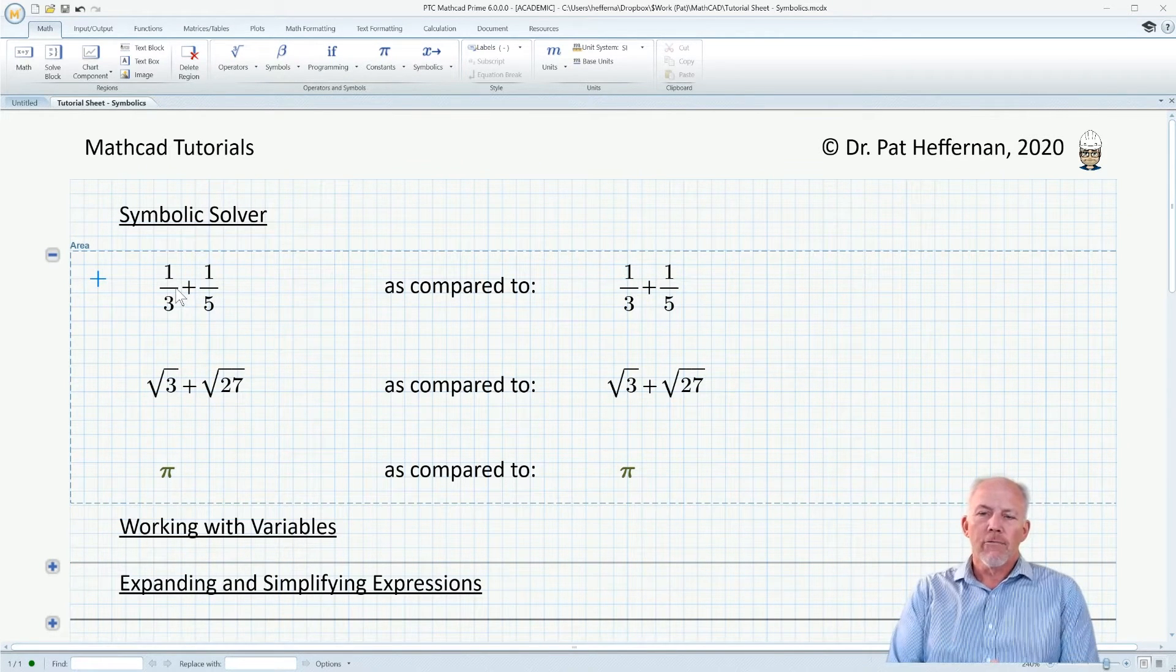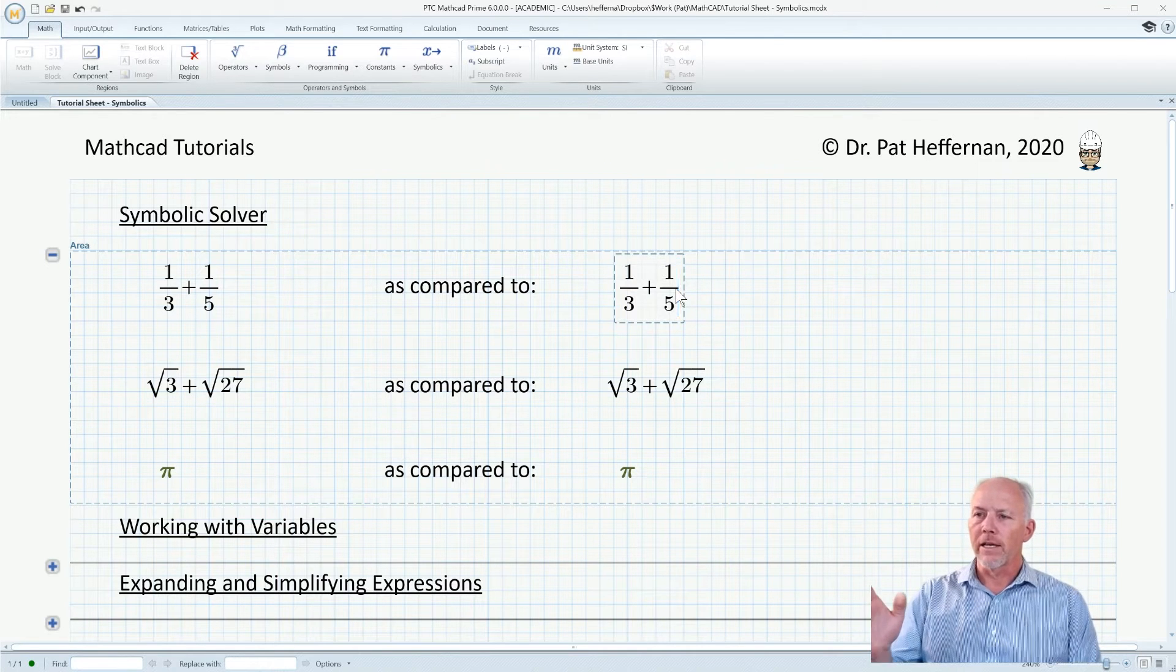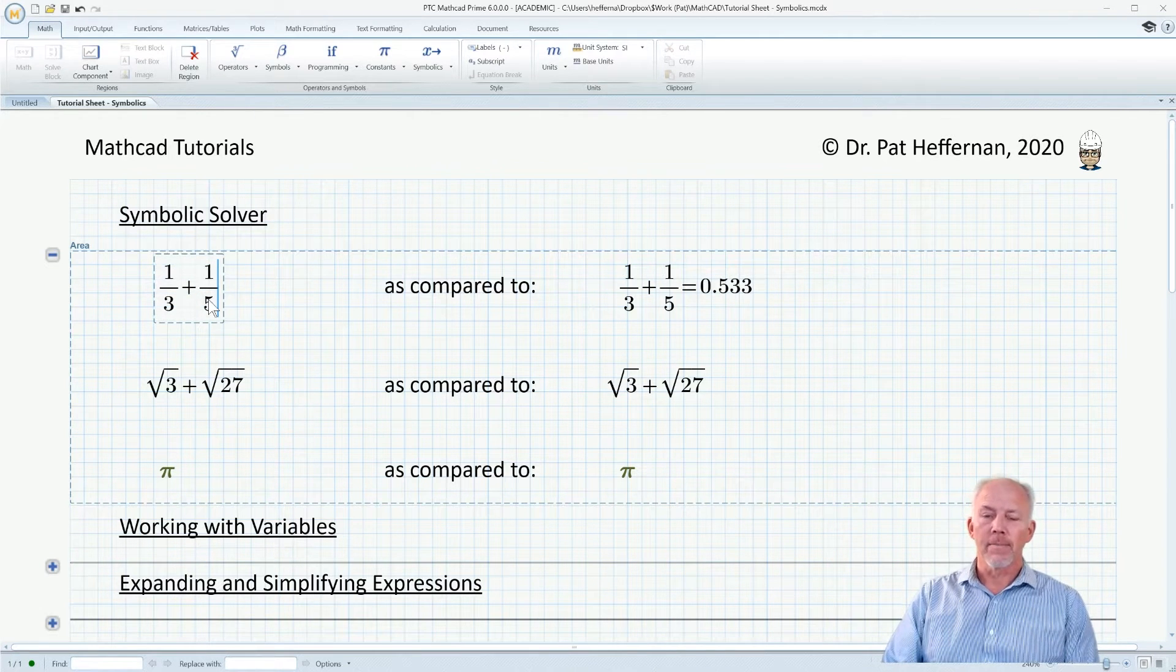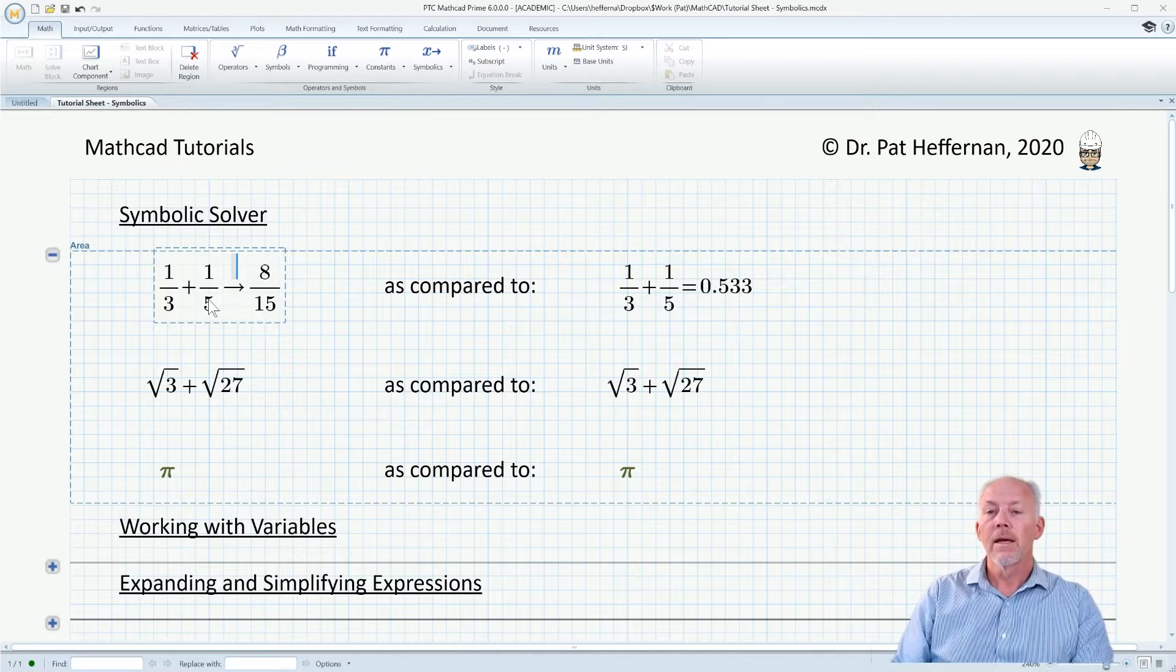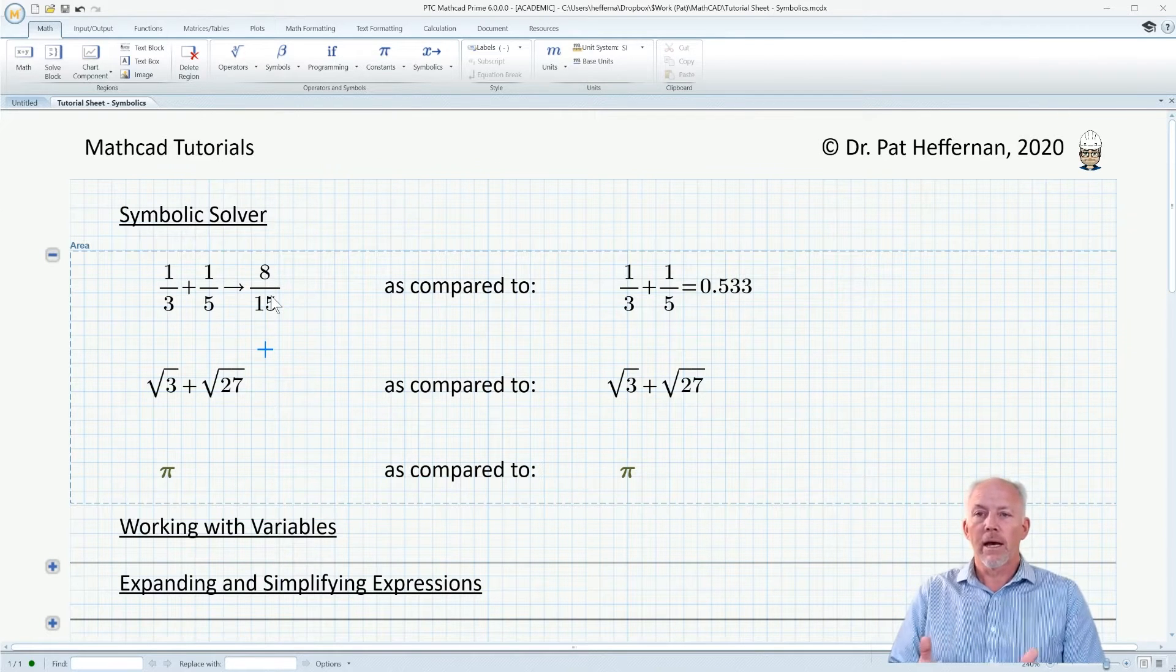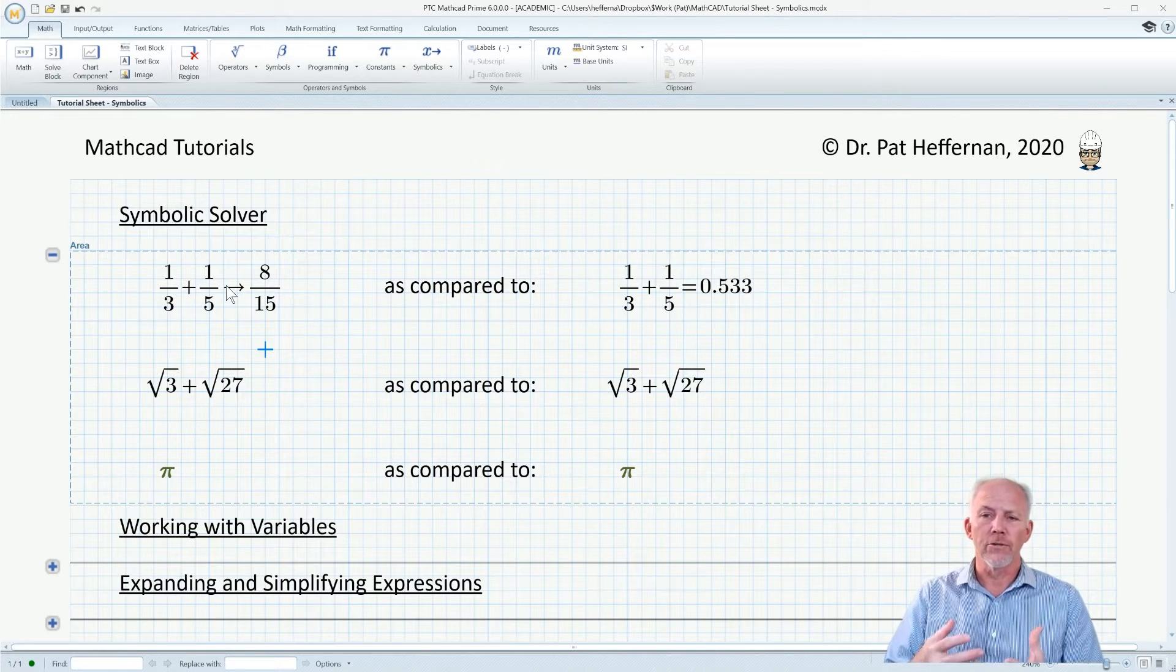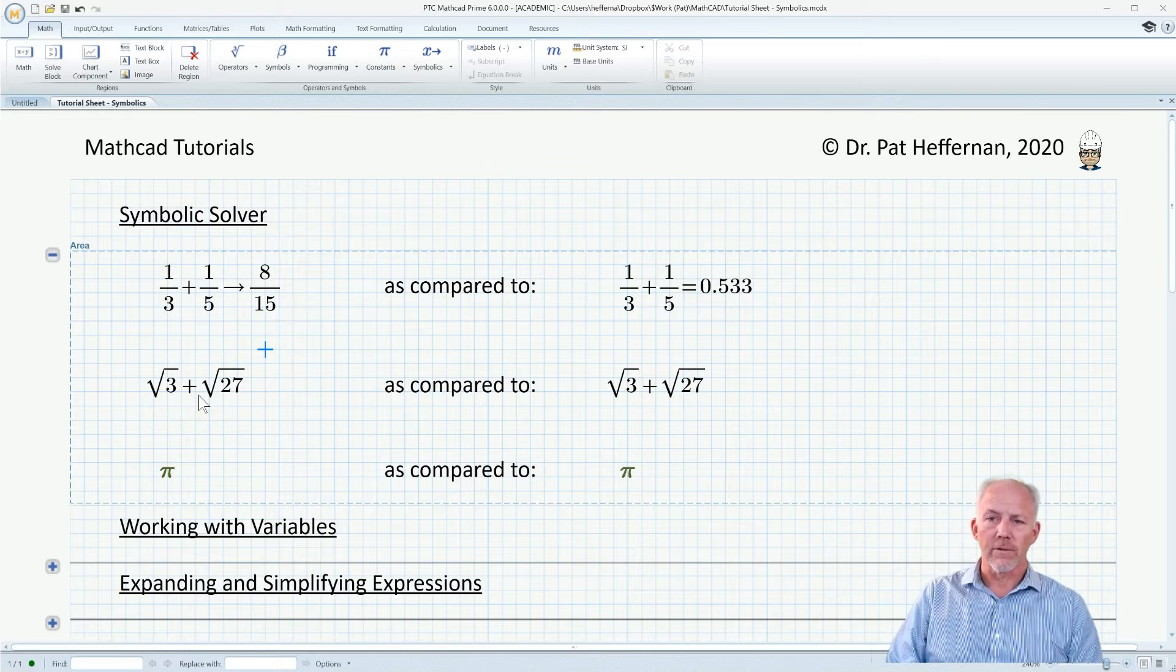So let's get into it. Symbolic solver. If we're using fractions, I've already put in one-third plus one-fifth. I'm going to go over here to the right. If we were to use the normal equal sign, we would get a decimal answer back out. But perhaps we didn't want that. Maybe we wanted it resolved as a fraction. In this case, I'm going to use the control period. That engages the symbolic solver, and you see it provides us a solution in fraction format, which can be very useful.